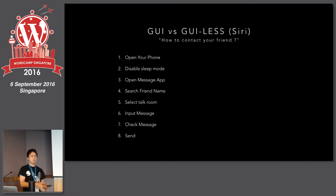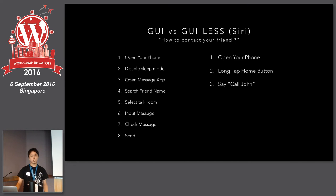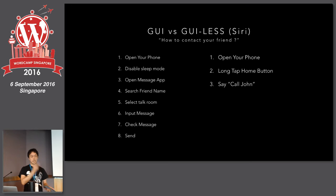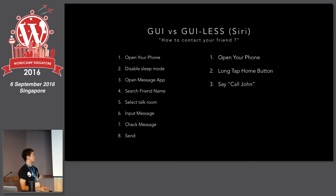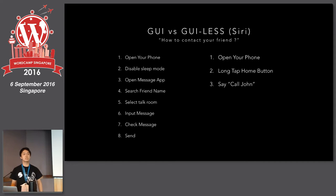But on iPhone, using Siri, only three steps: open your phone, long tap the phone button to wake up Siri, and say 'Call John' or your friend's name. GUI-less needs very few things. GUI needs many things to control the interface, but a GUI-less application does very few things.